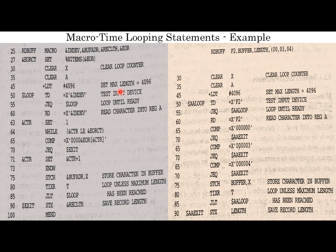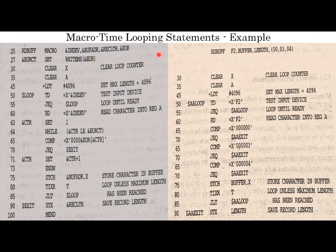Next are macro time looping statements. In the earlier examples we studied if/else. Here we study looping — specifically a while loop. The macro invocation is: rd buff f2, buffer, length, then a list in brackets: 000304. EORCT is set using percent N_items and percent UR. The meaning is N_items counts the number of elements in the list. UR is a list, so it counts the number of items in UR.